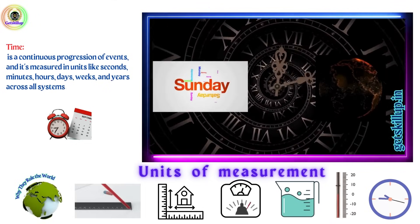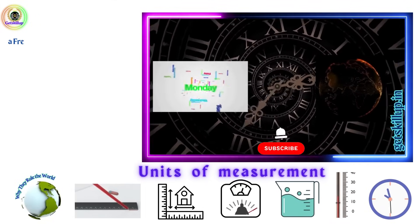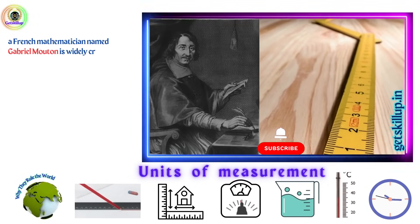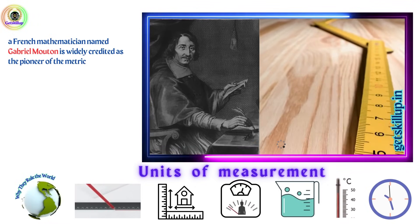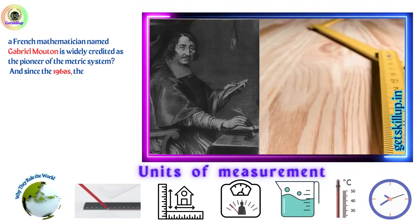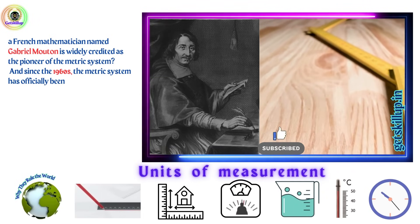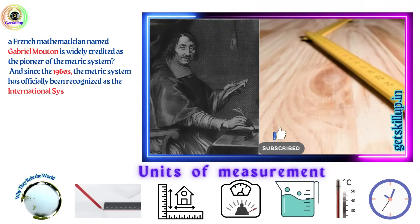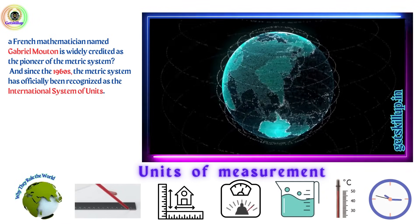Did you know a French mathematician named Gabriel Mouton is widely credited as the pioneer of the metric system? And since the 1960s, the metric system has officially been recognized as the international system of units.